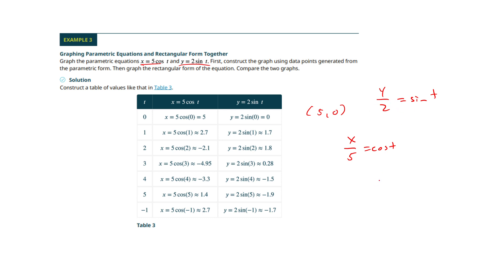Now, if I go ahead and use the Pythagorean identity, I get cosine squared t plus sine squared t equals 1. So I'm going to get x to the fifth squared plus y, or sorry, x over 5 squared, y over 2 squared equals 1.